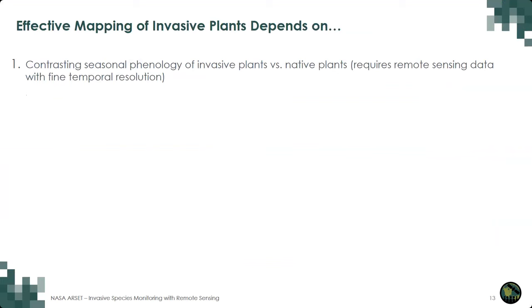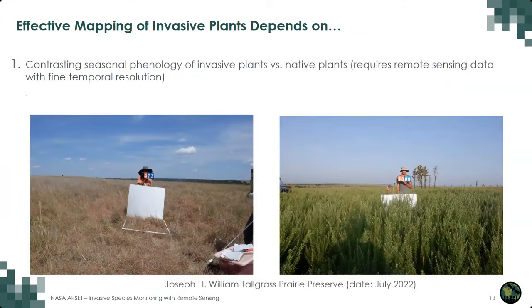One of the easiest ways to effectively map invasive plants in grassland ecosystems is by taking advantage of contrasting phenology of invasive plants compared to native plants. Phenology refers to the life cycle events of plants — for example, when they green up or senesce. If you can find a time window where an invasive species is green and native plants are not, and collect your remotely sensed data during that period, the odds of success in mapping will be much higher. The key point is that this phenology changes a lot from year to year due to temperature or precipitation.